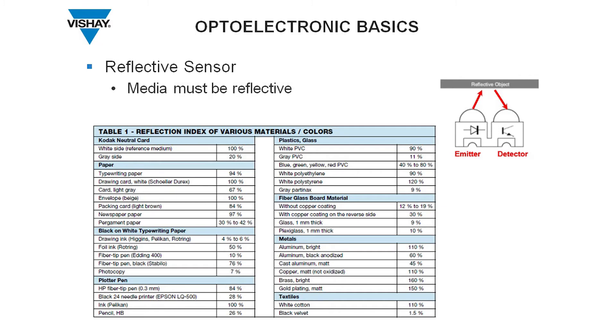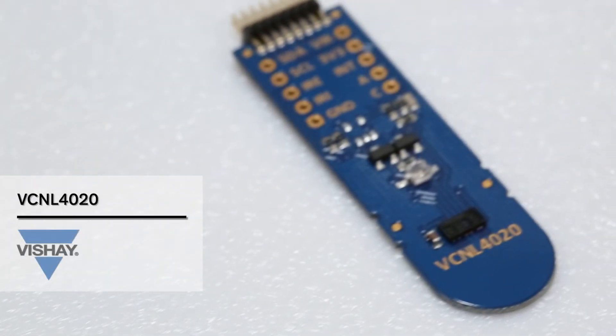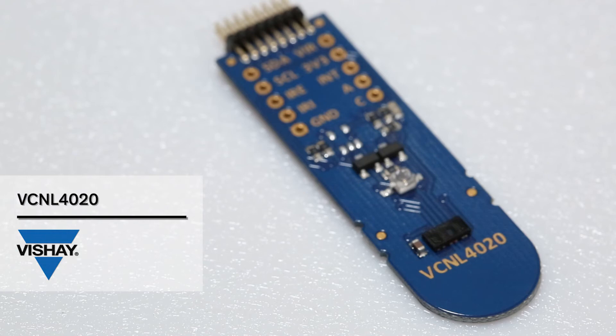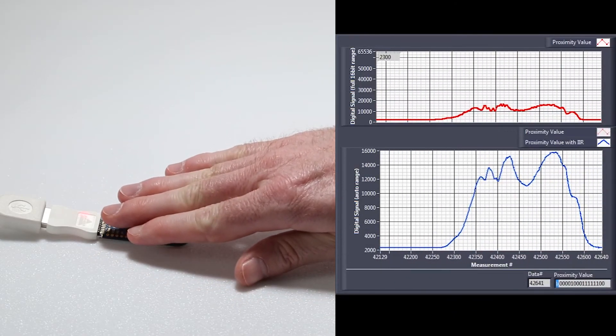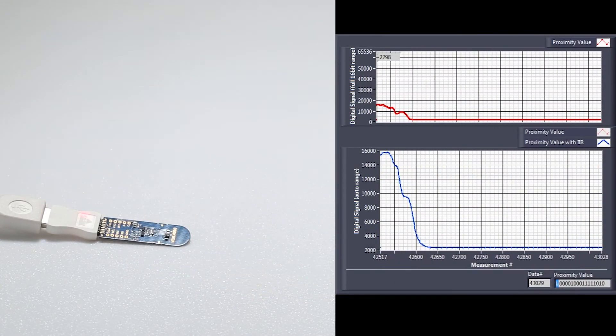A capacitive sensor needs a few square centimeters of copper. If space constraints exist for the design, optical solutions are a better fit. The cheapest solution is the infrared system. The principle is to send an infrared wave to a reflective object and detect the amount of light returned. For instance, the VCNL4020 from Vishay works on this principle — moving my hand next to the sensor produces more reflections. However, the reflections depend on the type of material, so this technology is not reliable for measuring distance.